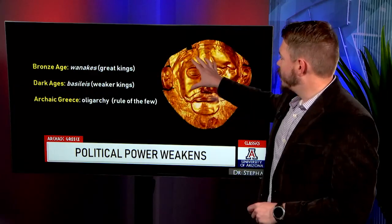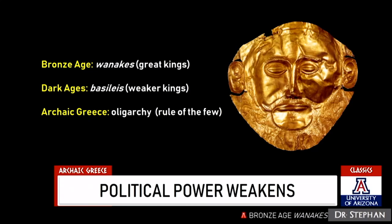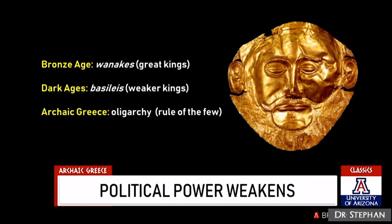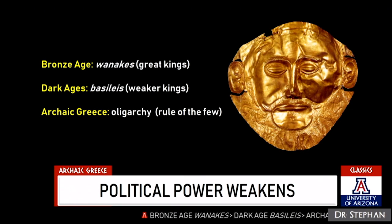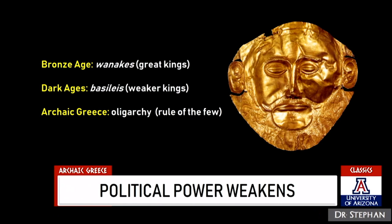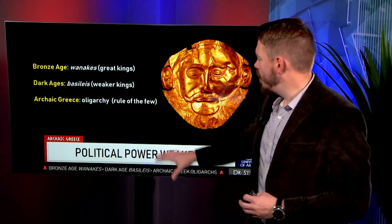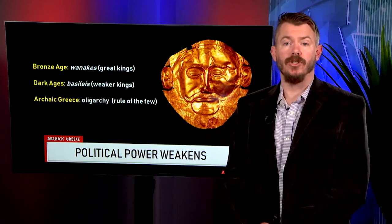Politically, we see a weakening of power — more distribution of power to a larger number of people. In the Bronze Age we had great kings, the Wanakes, ruling from palaces at sites like Knossos and Mycenae. Moving into the Dark Ages, the term for kingship is basileus — the kind of weaker kings of the Iliad and Odyssey. By the Archaic period, the 8th century, we don't have many kings at all. Instead we have oligarchies — the rule of the few — with a slow dispersal of power to a larger number of people.